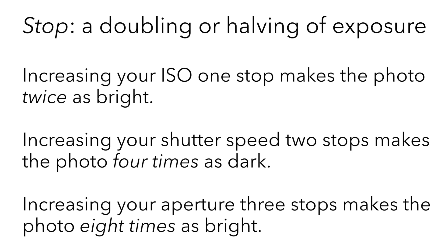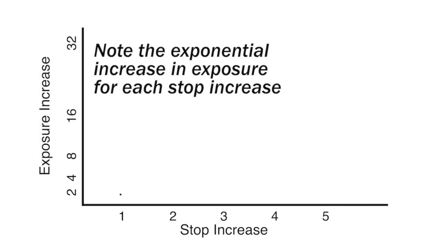Notice how those changes are exponential and not linear. If your scene has an initial brightness value of two — which is just an arbitrary number I chose to make the math easy — and you increase it by one stop, it'll have a brightness value of four. Increase it a second stop and it'll be eight. Increase it a third stop and it'll be 16, and so on.